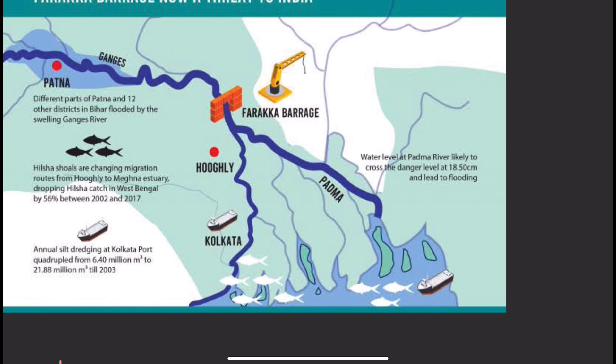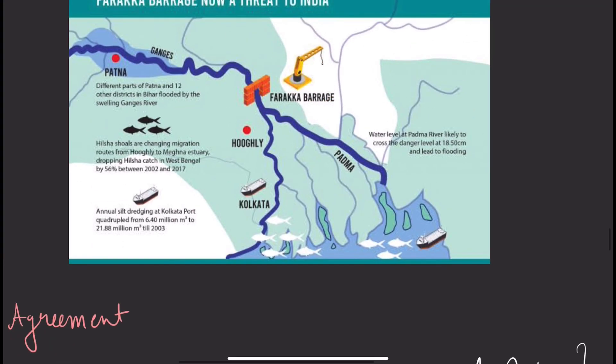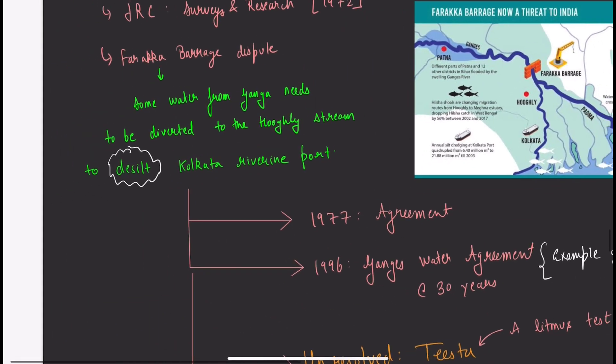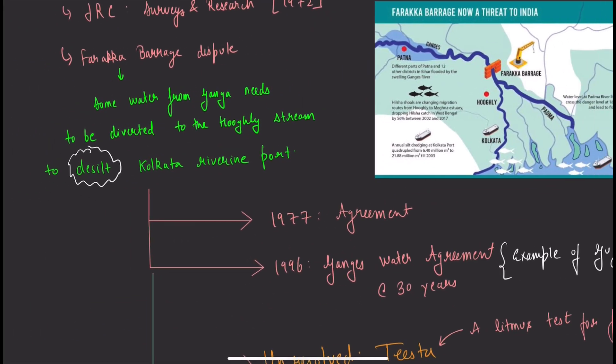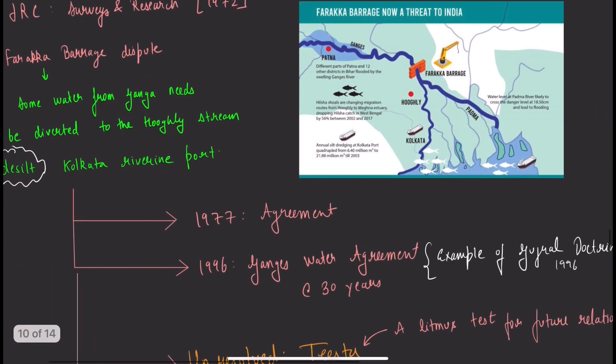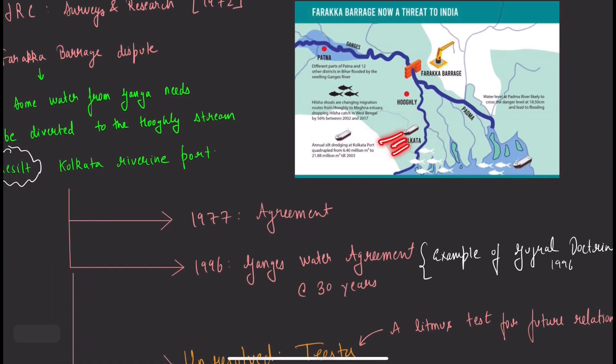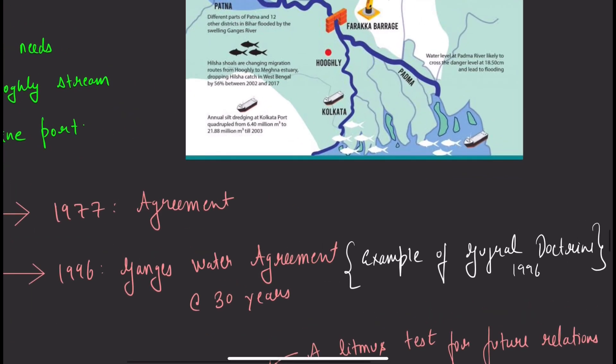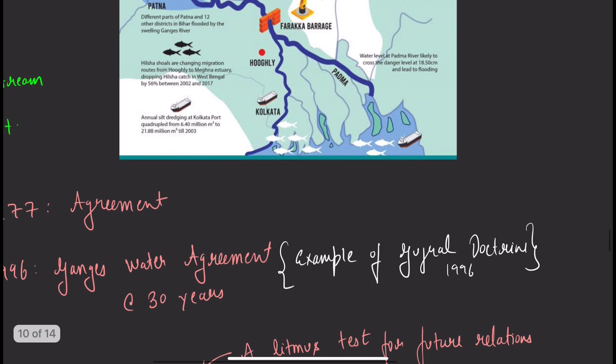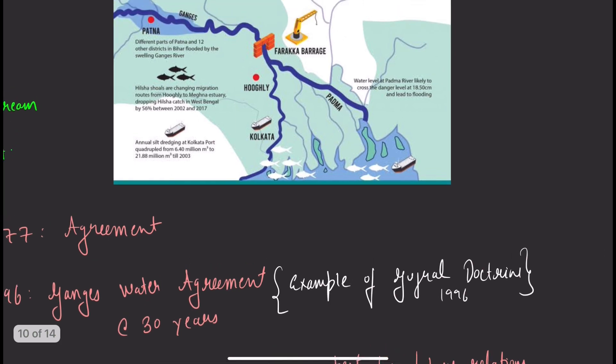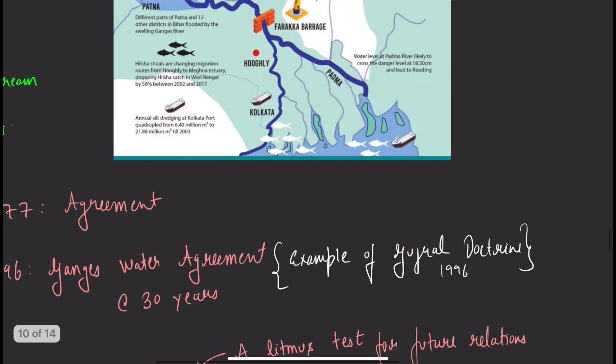The Farakka Barrage is like a dam or small barrage. It was made so we could divert water from Ganga towards Hooghly to desilt the riverine port in Kolkata. If the port gets filled with silt, it will destabilize because a certain level of water is necessary for ships to dock. Ships cannot stay near silted regions.